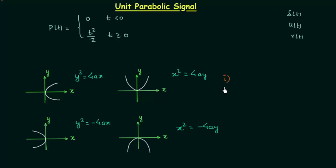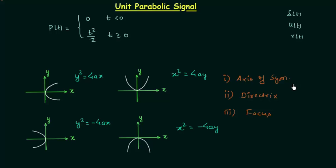Now I will explain three important terms related to parabola. The first term is axis of symmetry, the second term is directrix, and the third term is focus. The axis of symmetry is the axis about which the parabola is symmetric. For the first two parabolas, the x-axis is the axis of symmetry because when you fold the parabola about the x-axis, you will have the same parabola — symmetry is maintained.